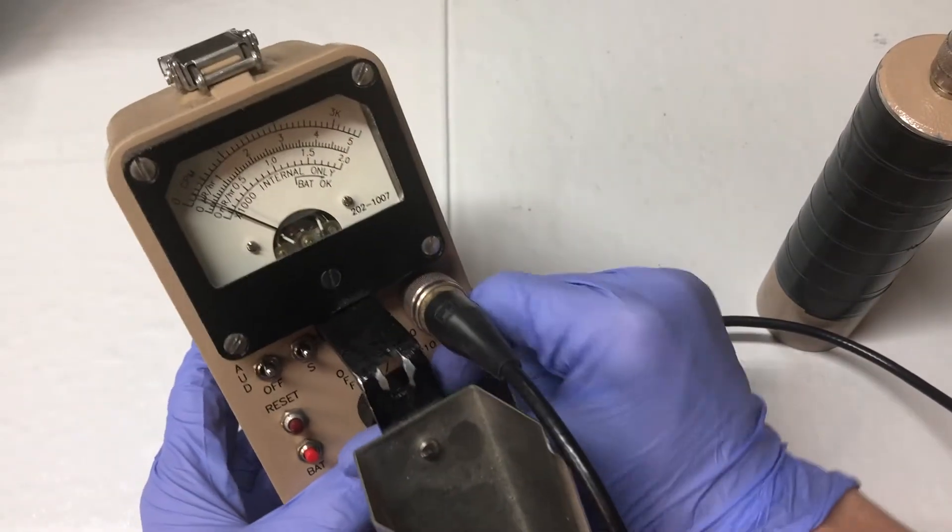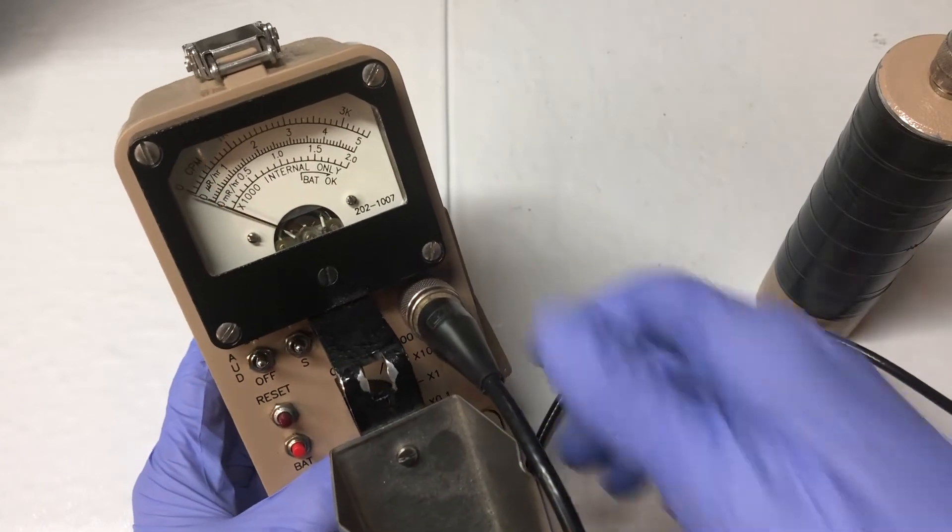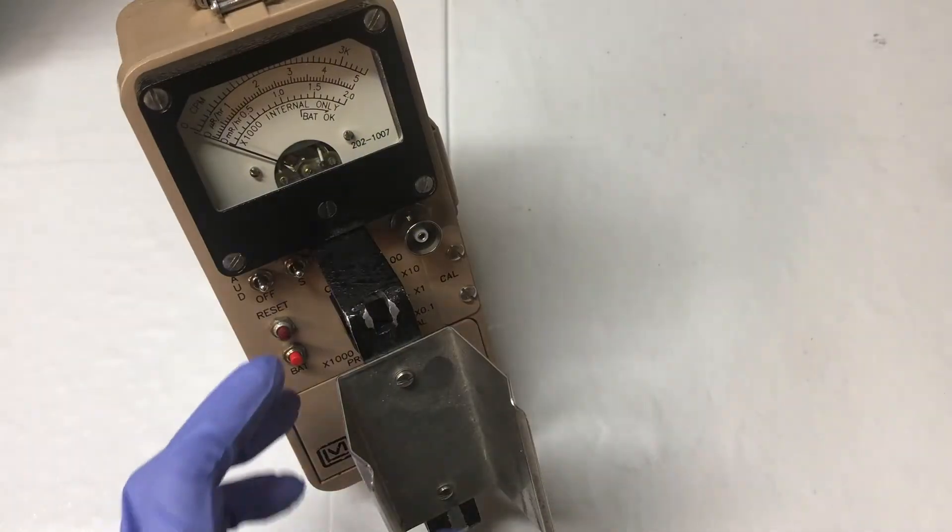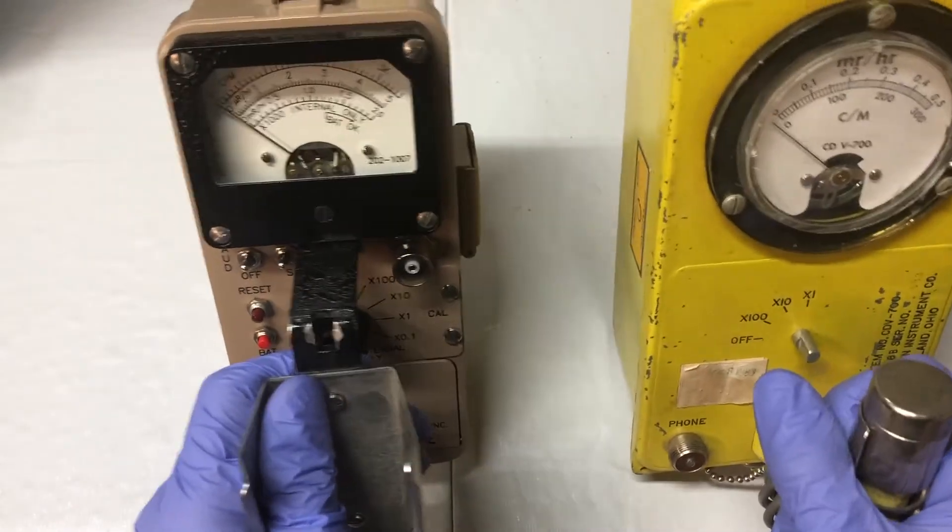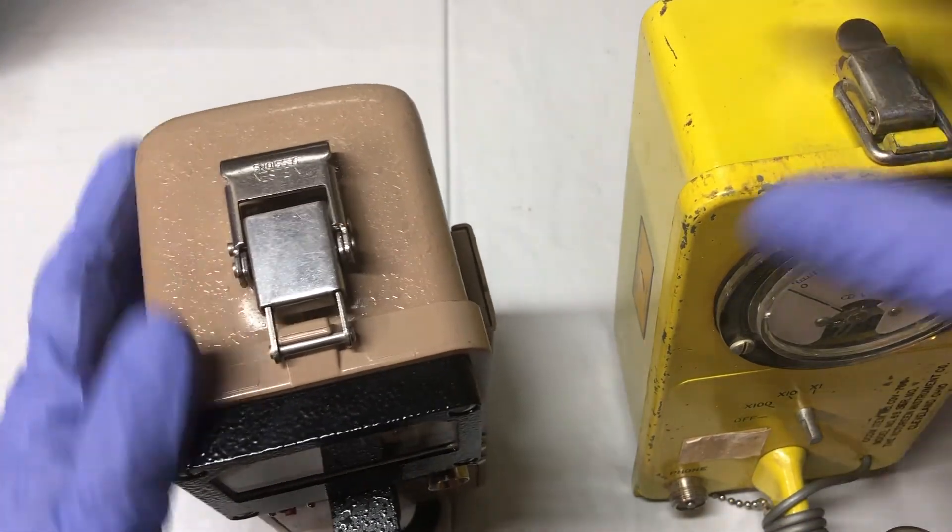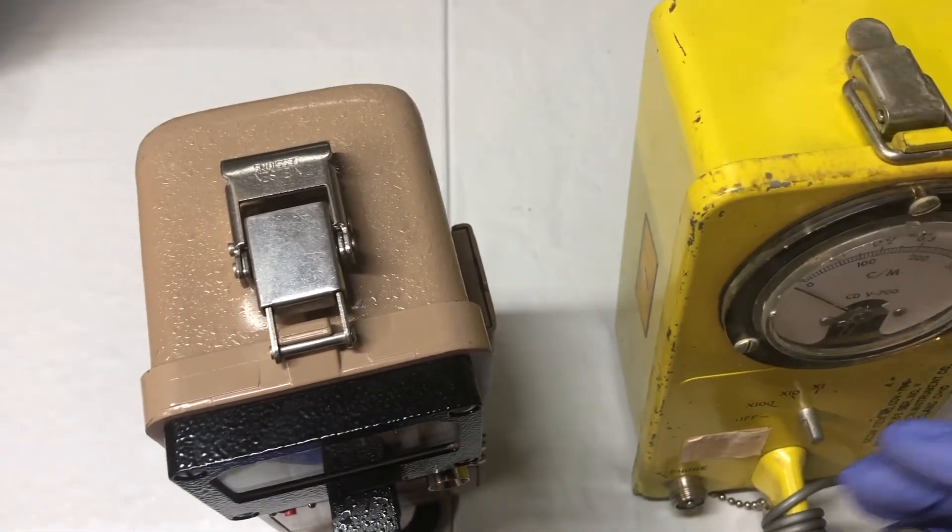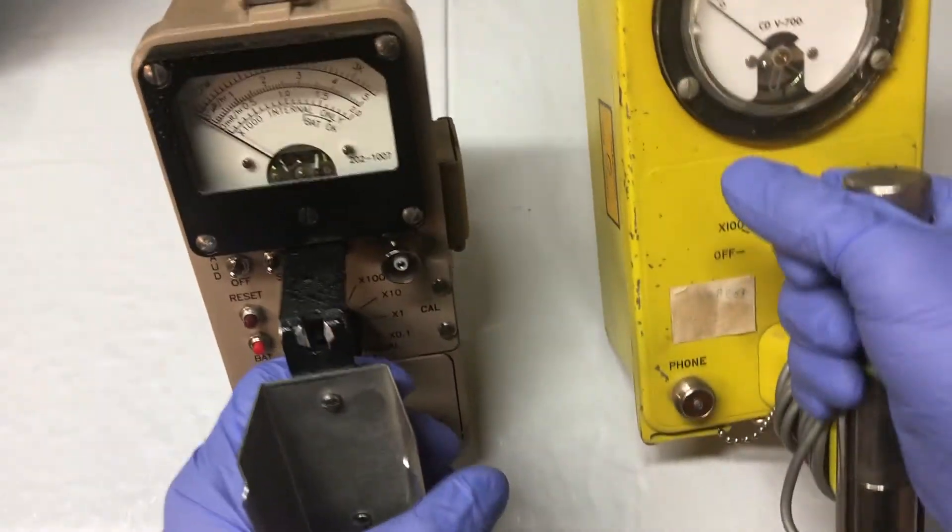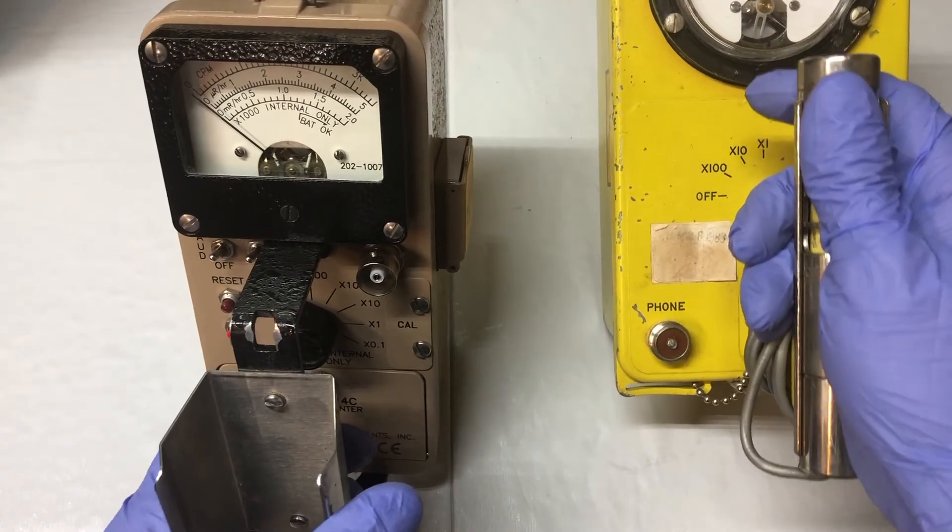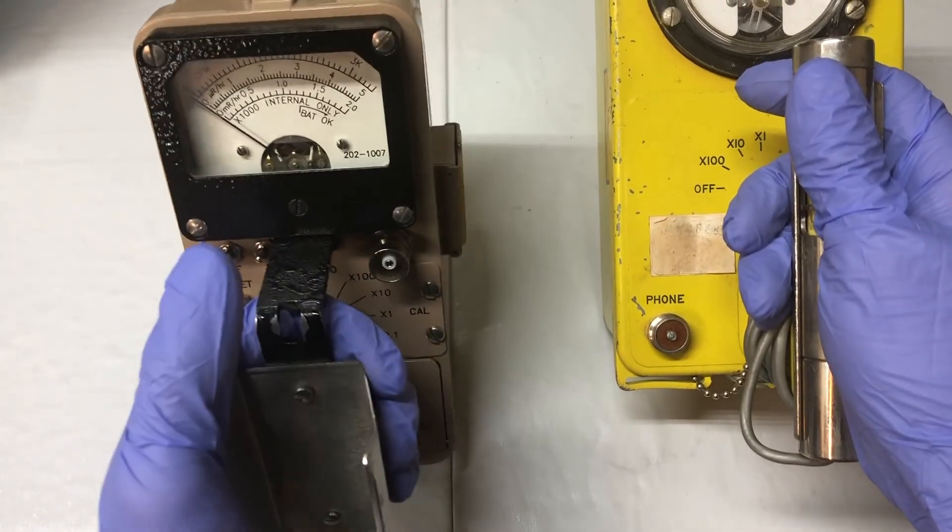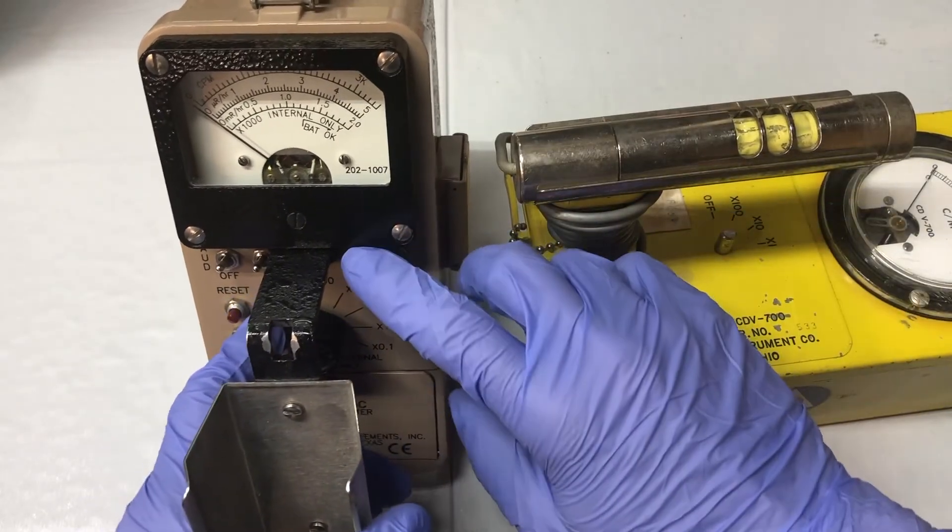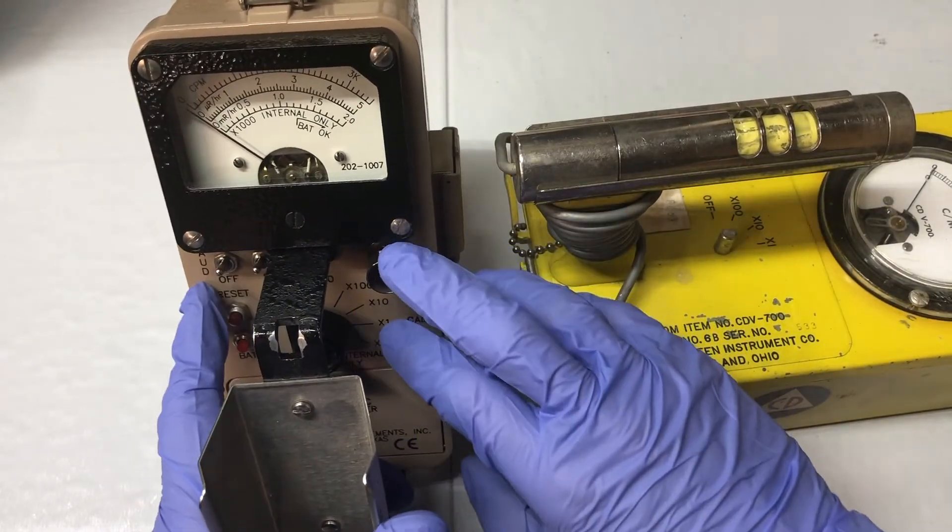Now let's turn it off and check out the insides and compare it to the CDV-700. First big difference is the color scheme—this one is tannish and this one's bright yellow painted for use in civil defense. The next big difference is the handles—this one is the actual Geiger-Muller tube and this one has a regular handle. The Geiger-Muller tube on this one cannot be detached, but this one can use scintillators and Geiger-Muller tubes.